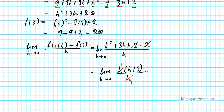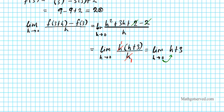Now it becomes the limit as h approaches 0 of h plus 3. Now I can plug in 0 into the expression. We'll make the substitution — drop the limit because we made a substitution — and we get 0 plus 3. The final answer is 3.